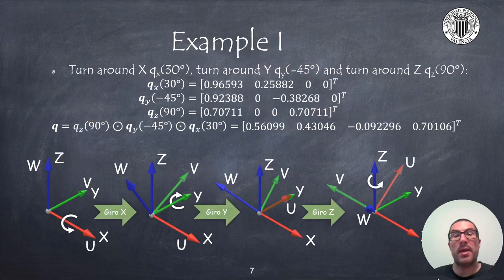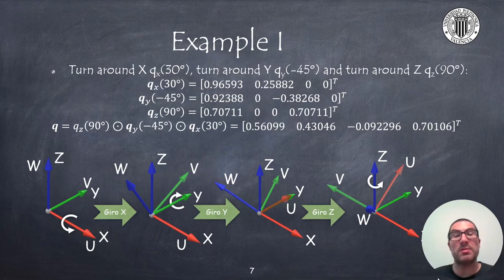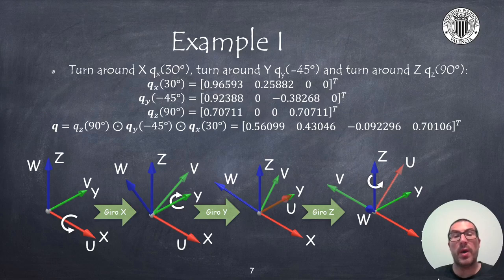Let's see an example in which we apply three turns: first one around the x-axis, the second one around the y-axis in the opposite direction, and finally a third turn around the z-axis, all of them with respect to a fixed reference frame. In this case, we must pre-multiply the basic rotations, and for this reason they appear in the opposite order as we apply them. The resulting quaternion multiplication sequence represents each of the turns applied in order to get the final orientation. To get the numerical results, we apply the quaternion multiplication operator using basic rotations defined by qx, qy, and qz quaternions.